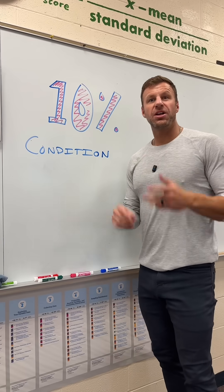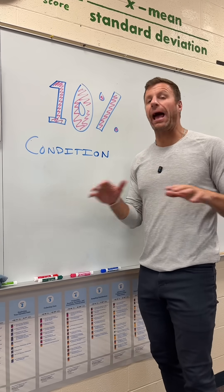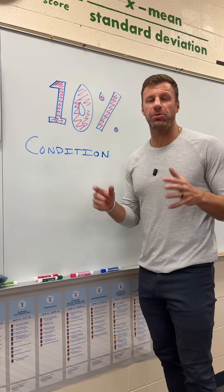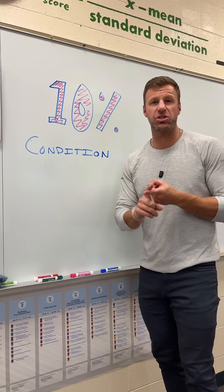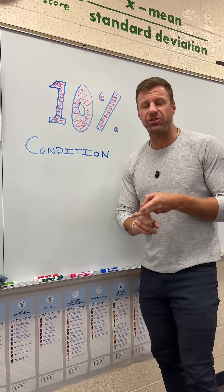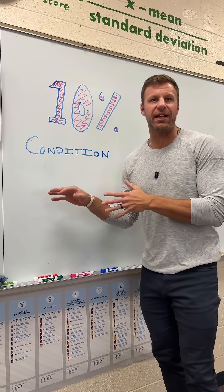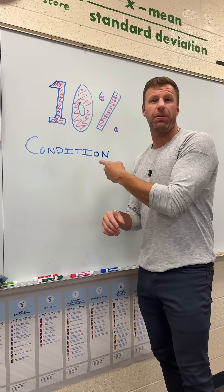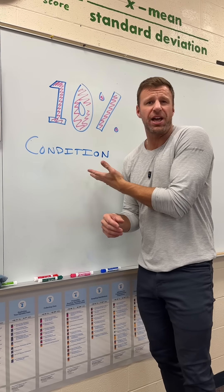What's up my stat stars? The 10% condition is an absolutely enormous condition that's going to help you when it comes to creating sampling distributions for proportions, for means, confidence intervals, hypothesis tests — basically everything in the second half of AP Statistics all depends upon the 10% condition being checked.